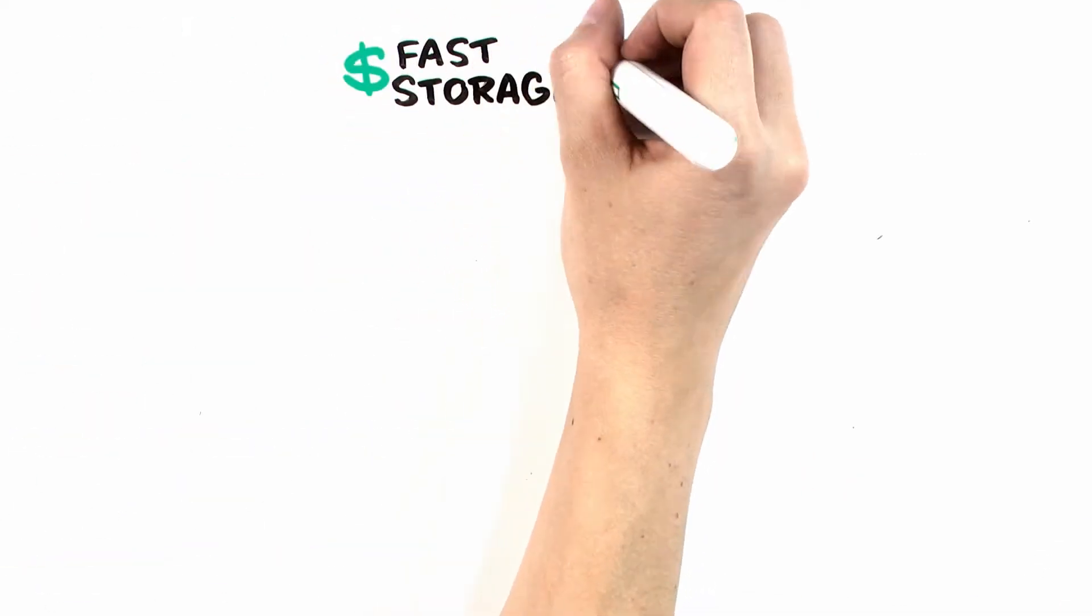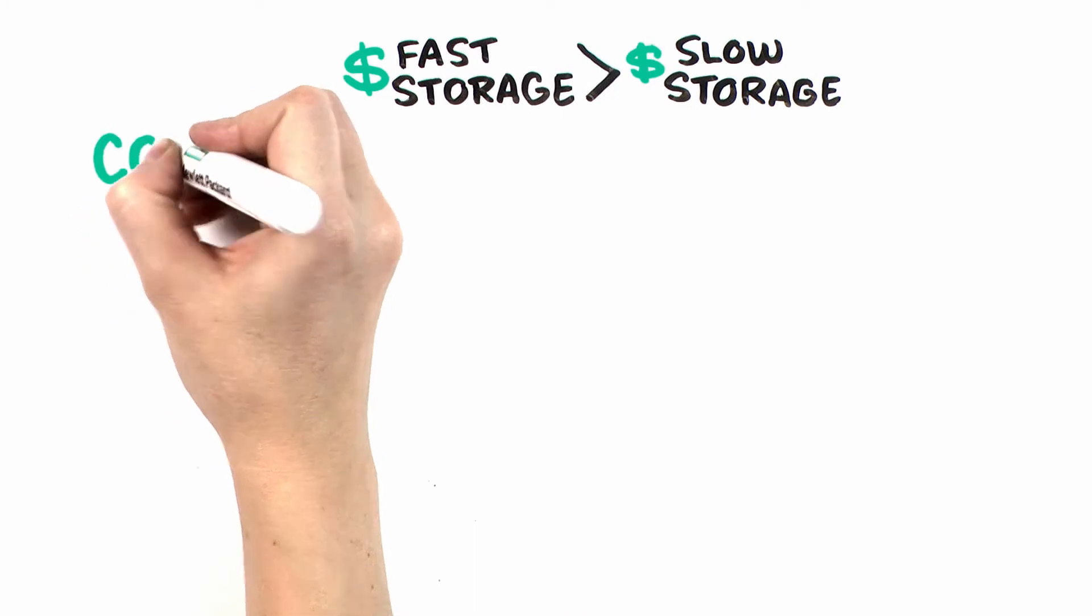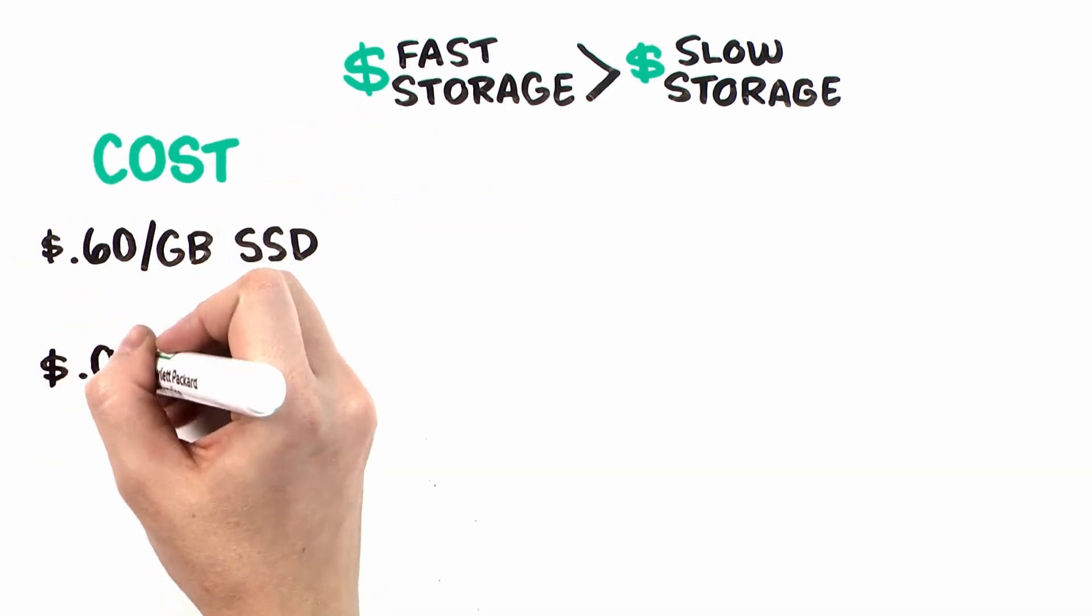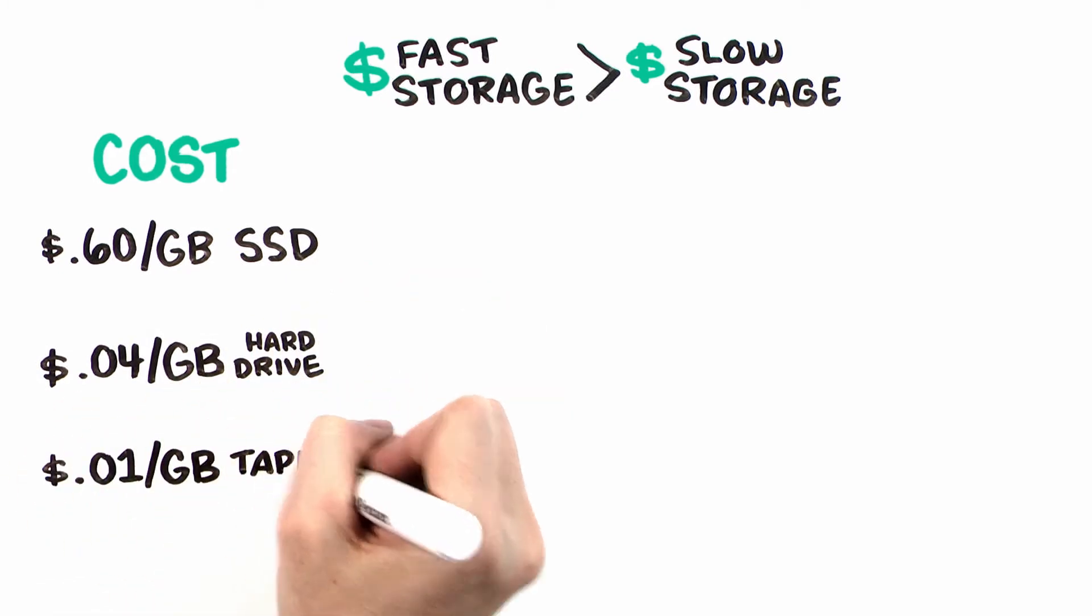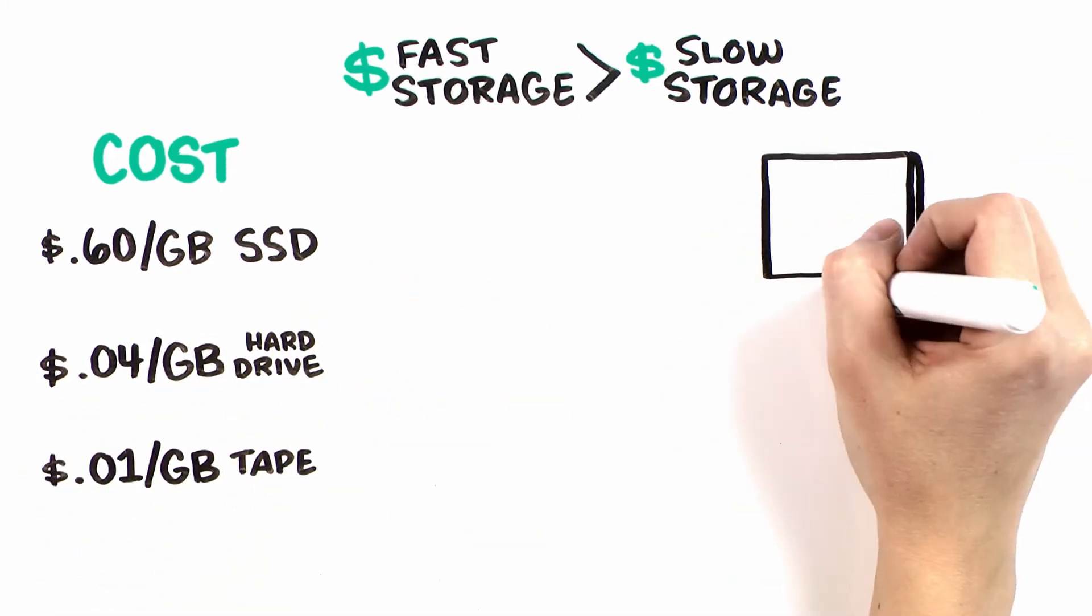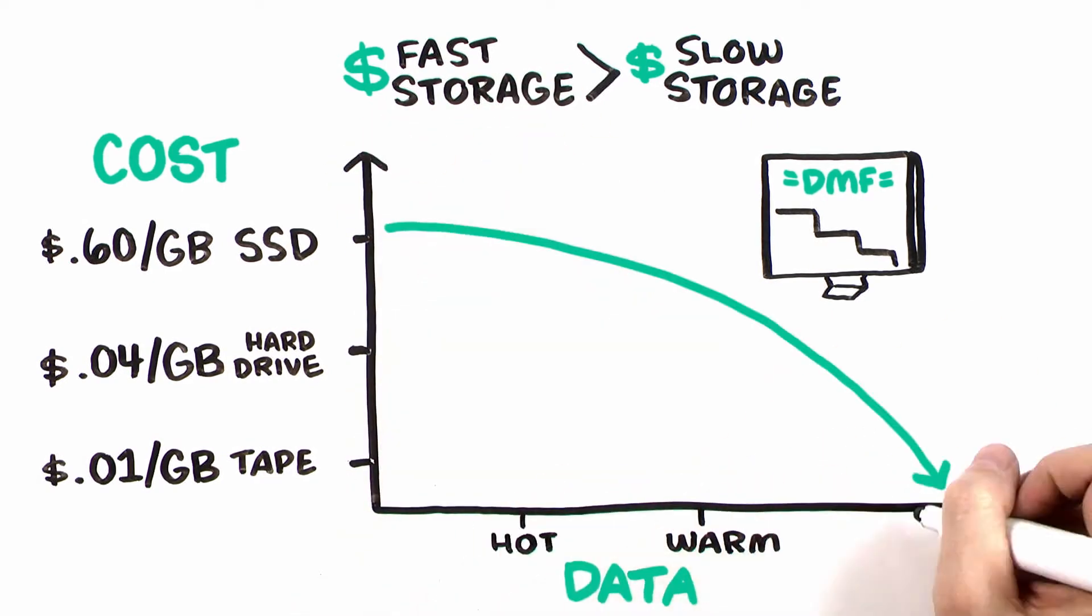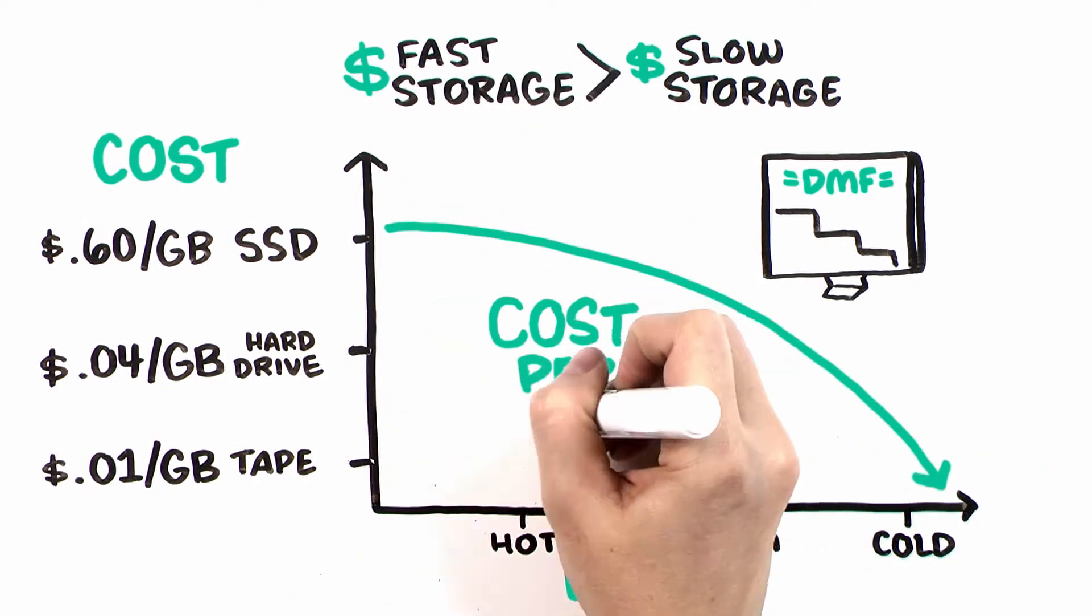Fast storage costs more than slower storage. Approximately $0.60 per GB for SSD, $0.04 for hard drives, and $0.01 for tape. So as DMF moves data down the continuum from hot storage to cold storage, the cost per GB drops as well.